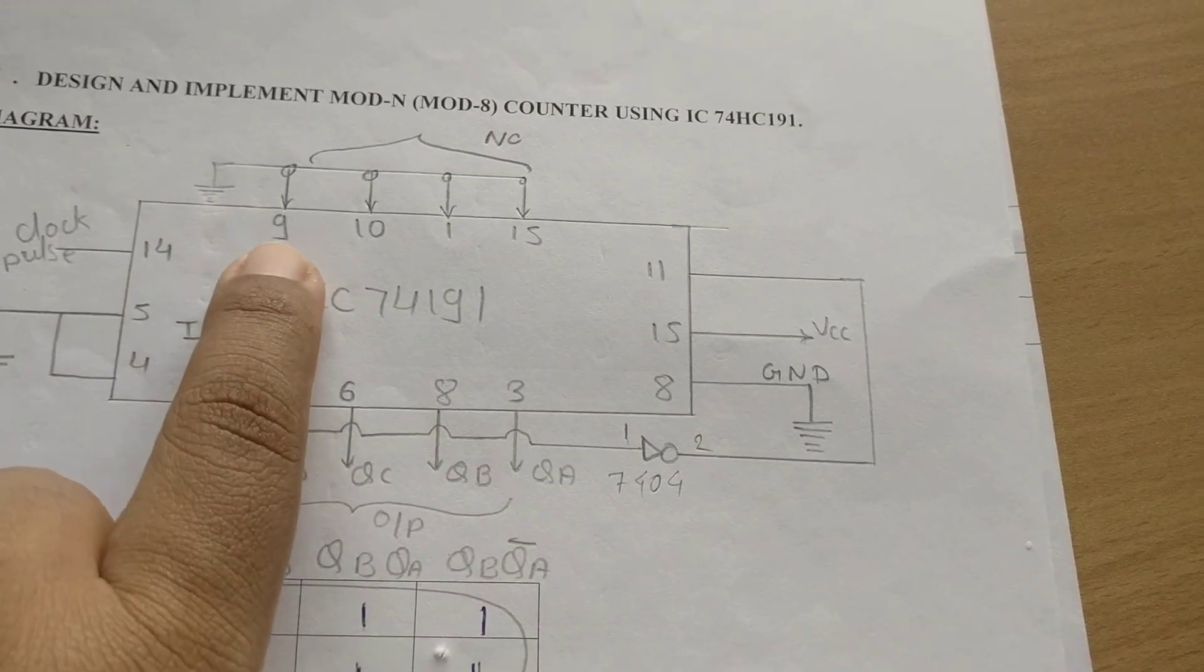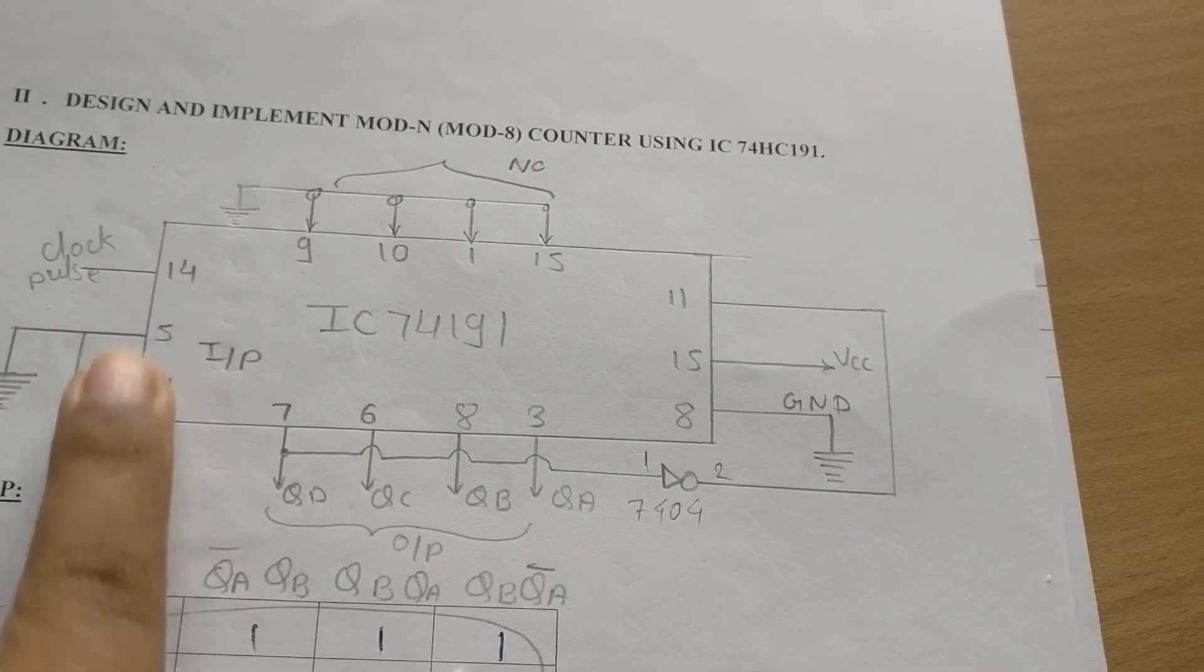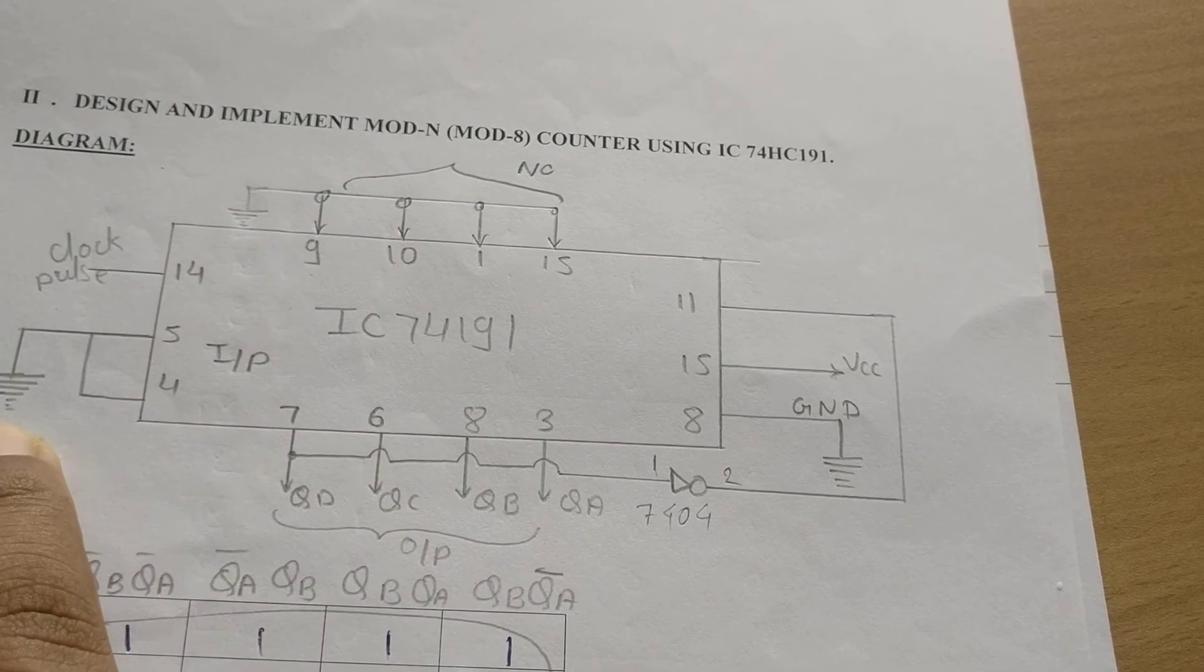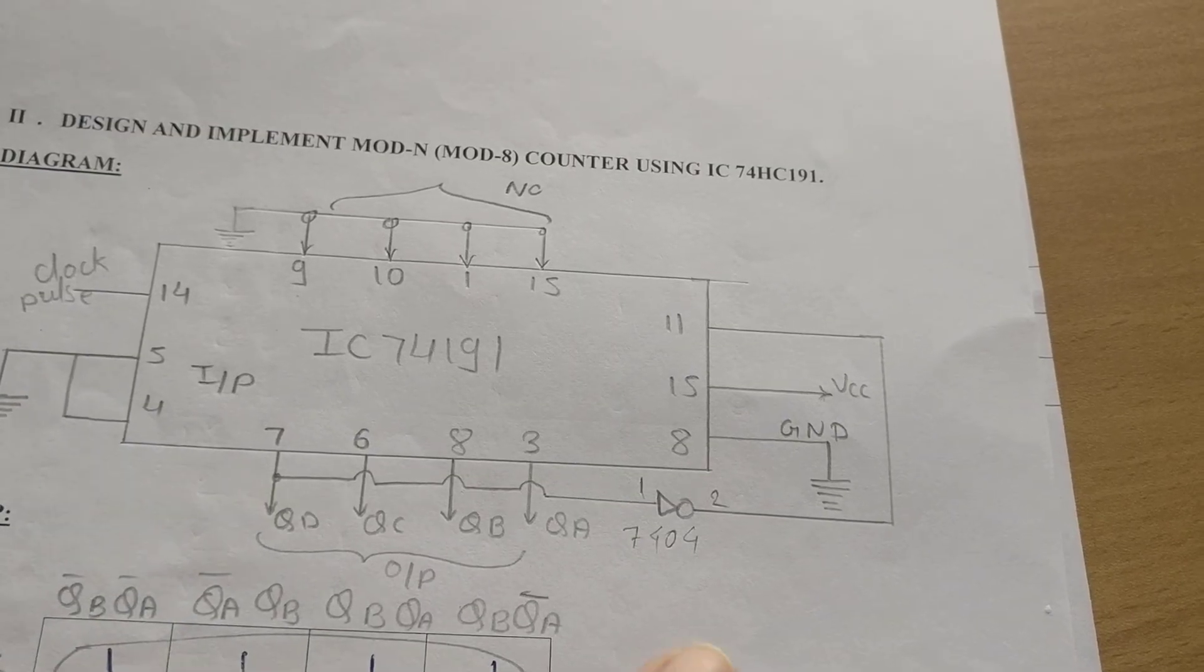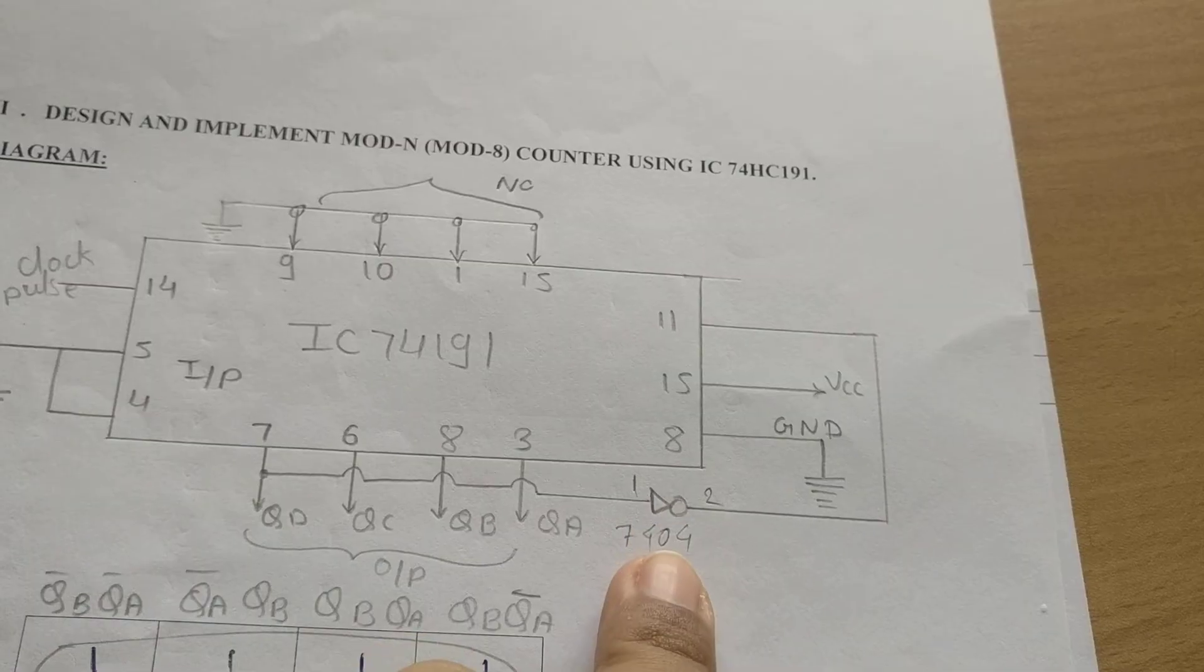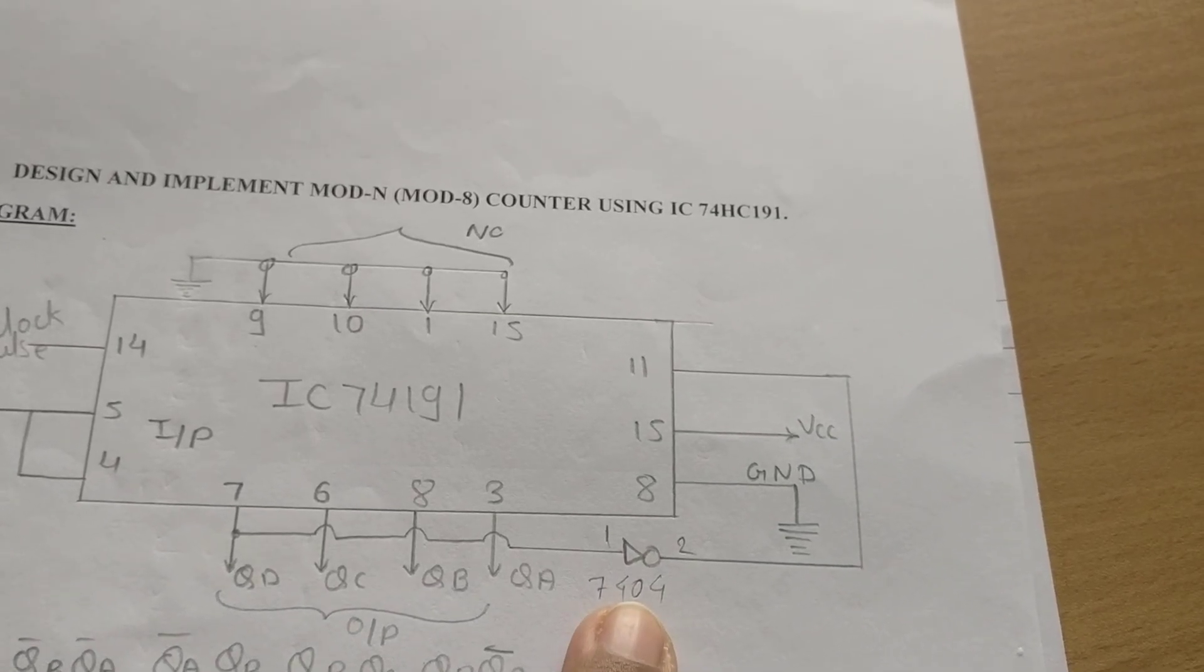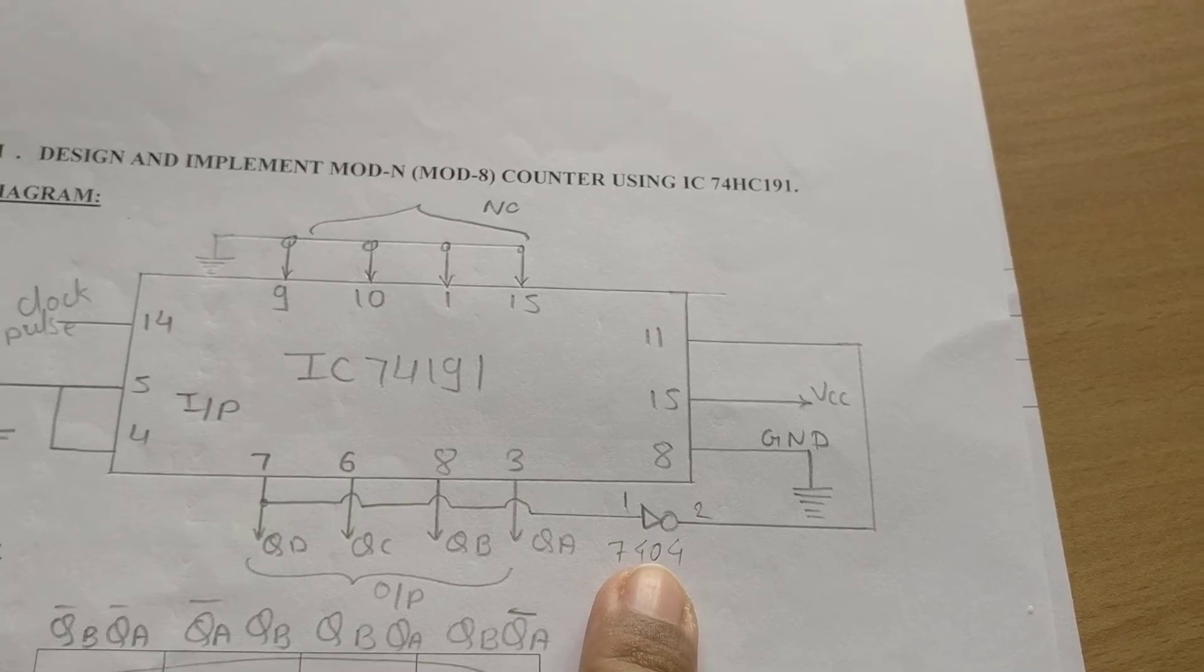The rest of the connections are the same. Pins 9, 10, 1, and 15 have no connections. Pin number 14 is clock pulse, pin numbers 5 and 4 are connected to ground. Pin number 16 is VCC, pin number 8 is ground, pin 11 is connected to output of NOT gate. If you do these connections, you will get mod 8 counter.